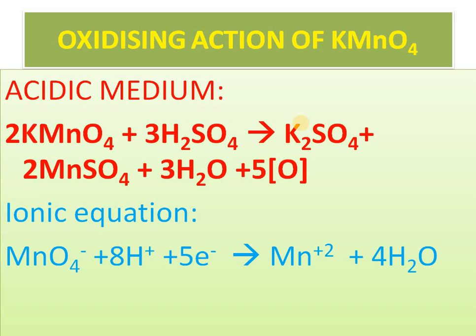You can see the equation: 2KMnO4 + 3H2SO4 gives K2SO4 + MnSO4 + H2O + O. KMnO4 in the presence of acidic medium is giving us nascent oxygen, and therefore it is acting as an oxidizing agent. This is one way we have to explain.